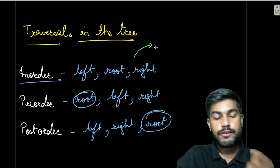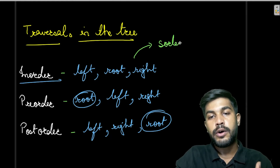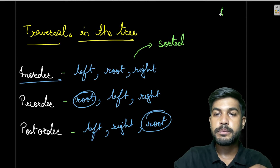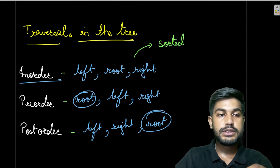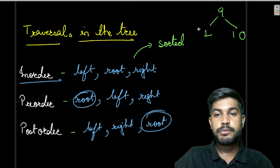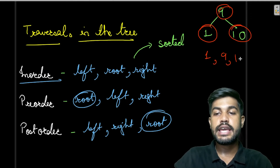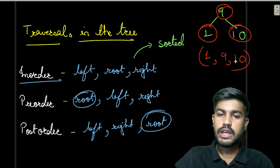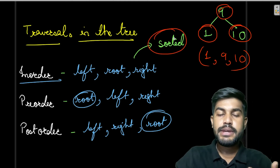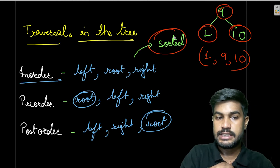If you do in-order traversal of a BST it provides the result in sorted form. For example, suppose a tree has nodes 1, 9, and 10. Doing in-order traversal — visit left, then root, then right — gives us 1, 9, 10 in sorted order. So in-order traversal of a BST always gives a sorted sequence.